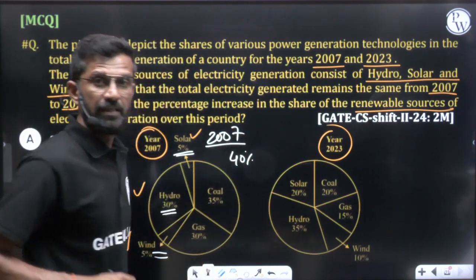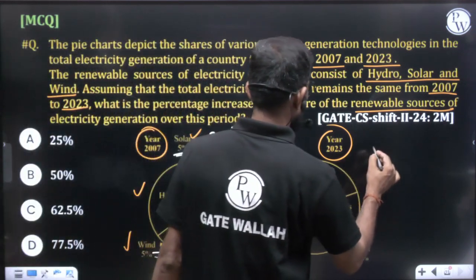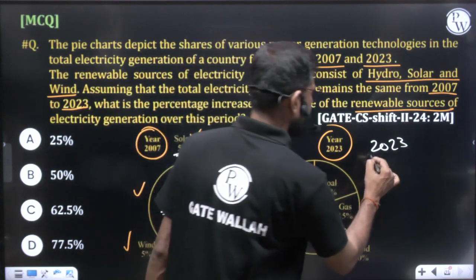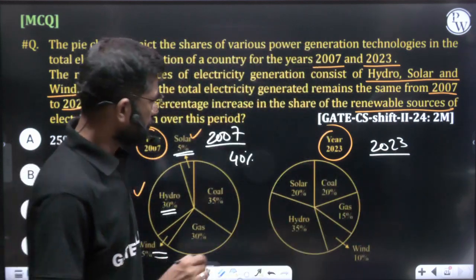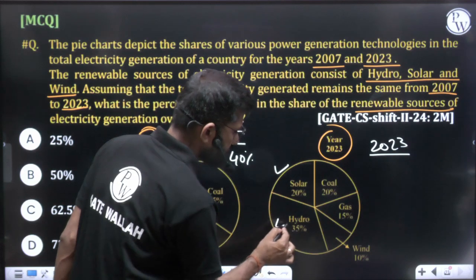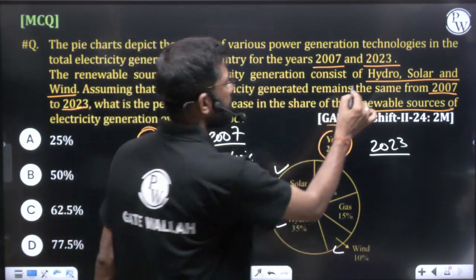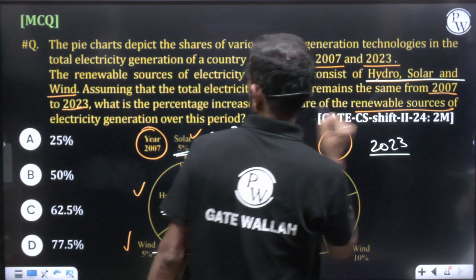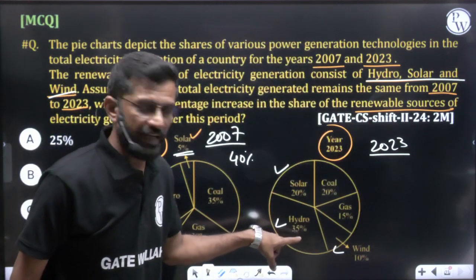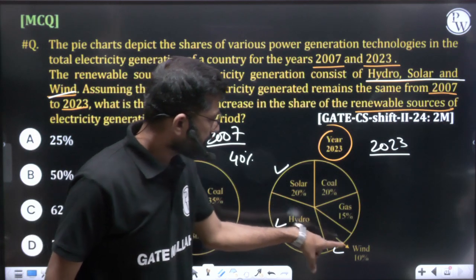For 2023, solar is 20%, hydro is 35%, and wind is 10% — these three are the renewable resources. So 20 plus 35 is 55, plus 10 is 65. In 2023, renewable resources account for 65%.